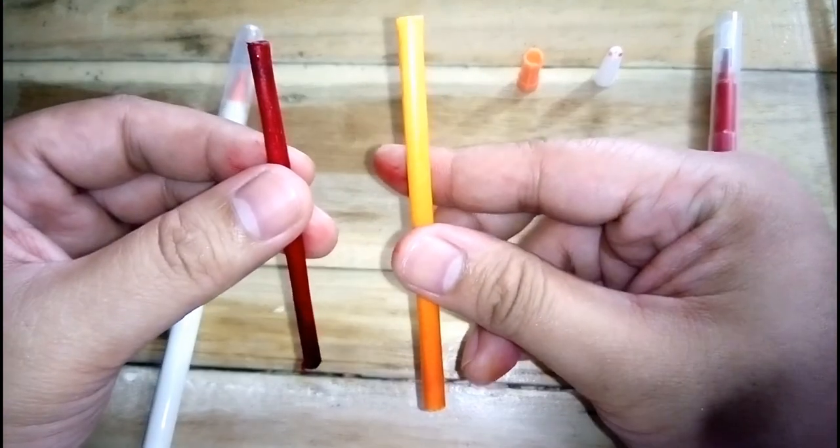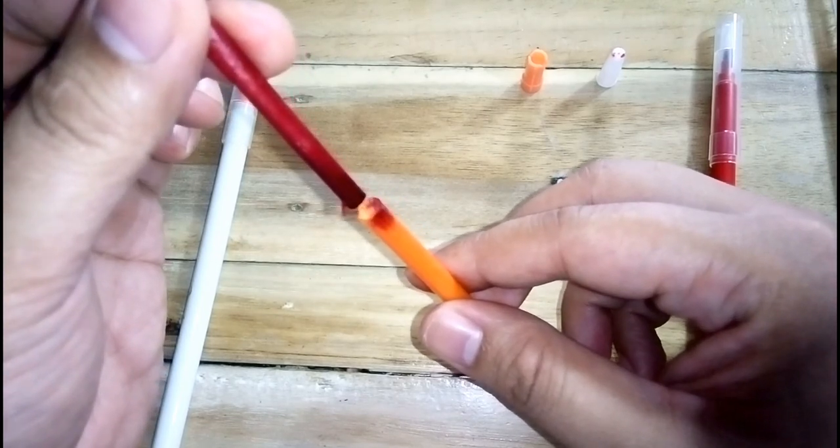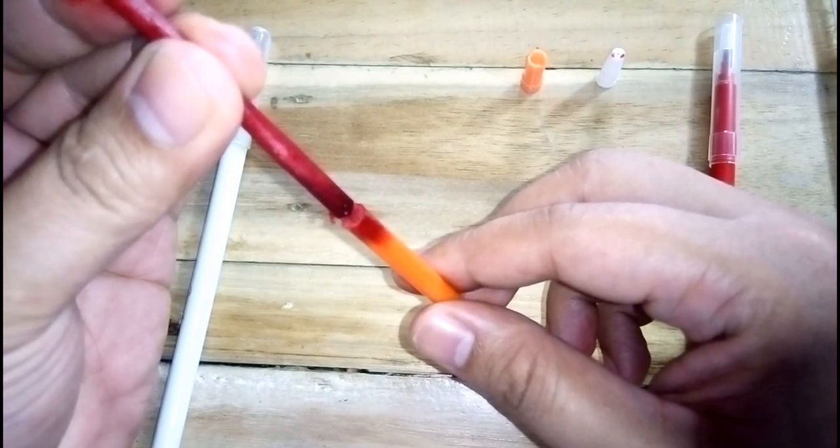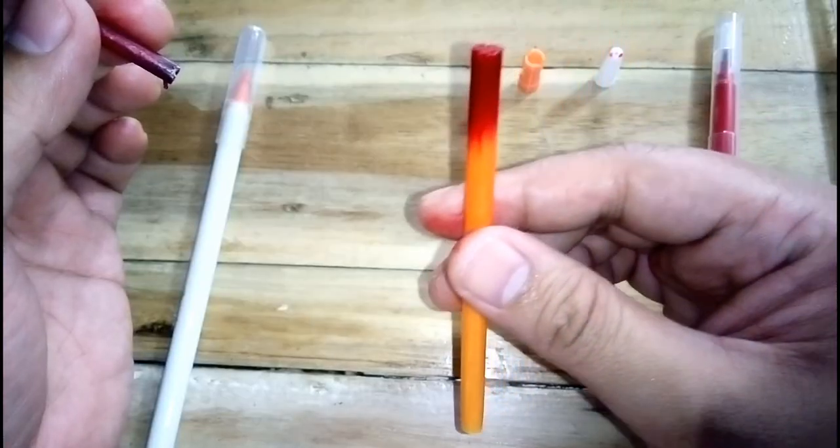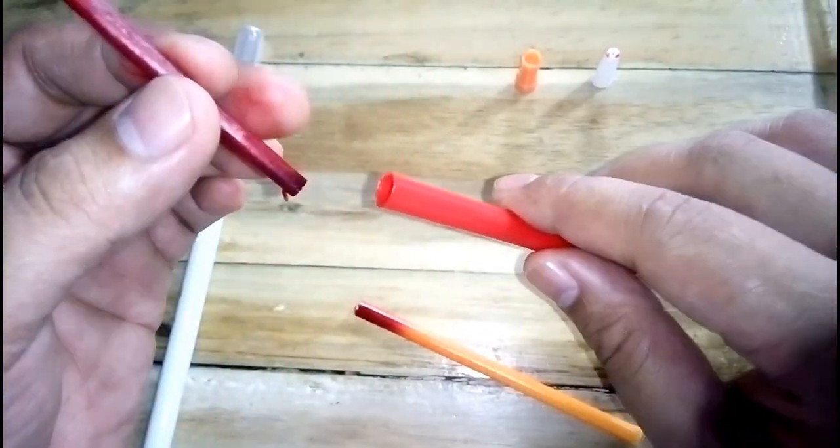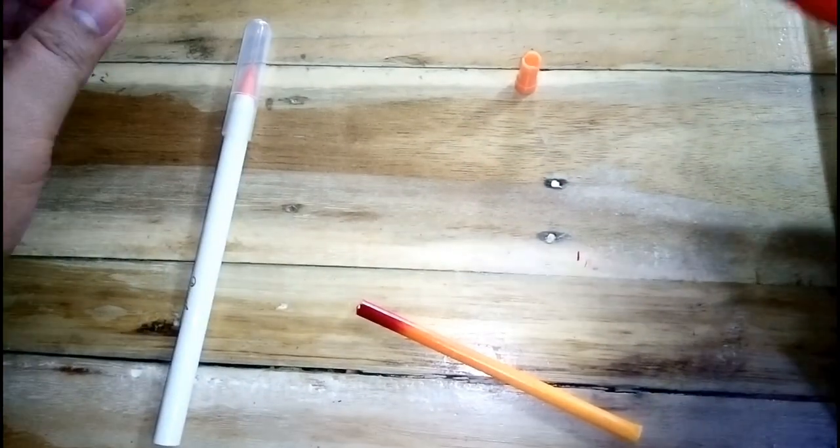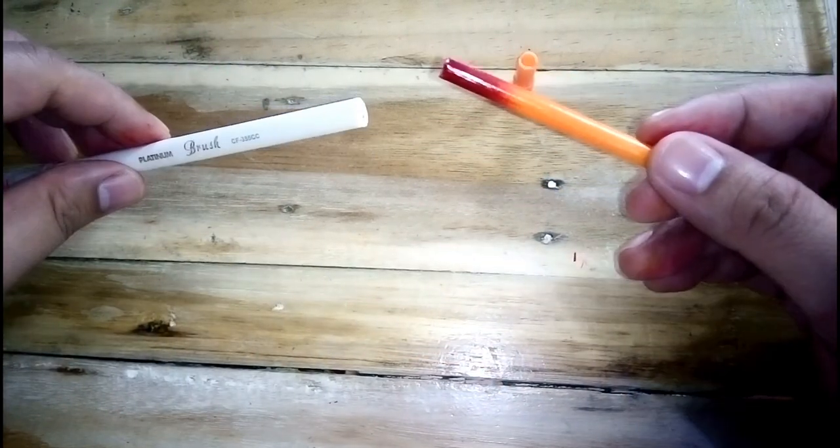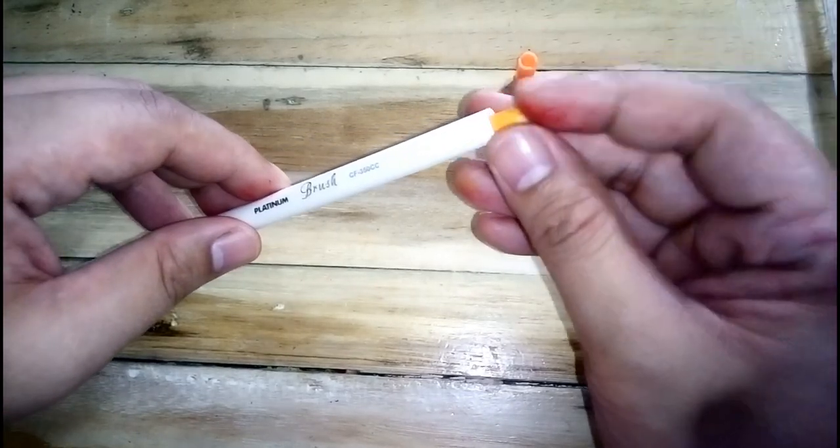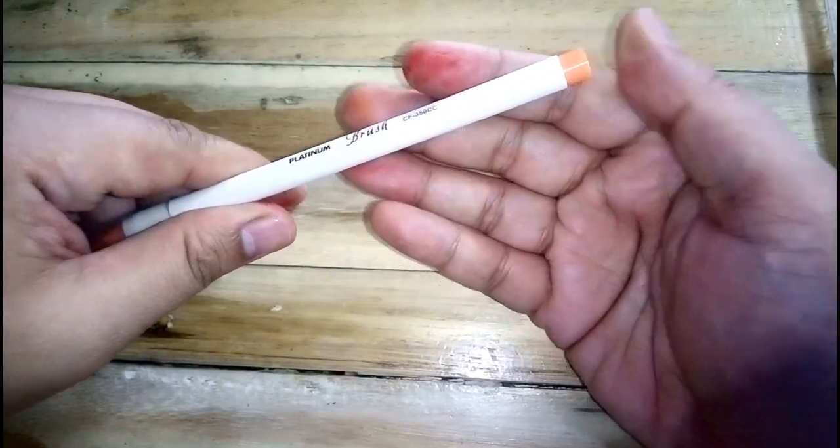Now we are ready to transfer the ink from the marker cartridge to the brush pen cartridge. After refilling the cartridge with new ink, just put it back in the brush pen. And also, take note of how I inserted the cartridge back into the brush pen.